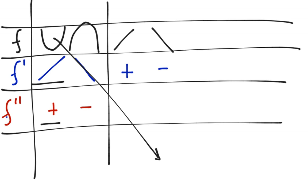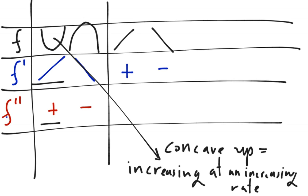One more thing to add in terms of wording: if f is concave up, that's the same as increasing at an increasing rate. The reason is that f prime is the rate of increase of f because it's the slope — it's the derivative. But if f prime is increasing, that means as time goes by we're increasing at a faster rate because f prime itself has a higher value. So the slope of f keeps getting bigger and bigger, hence increasing at an increasing rate.